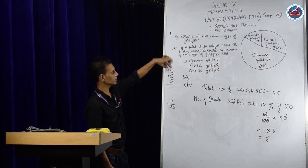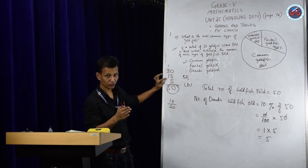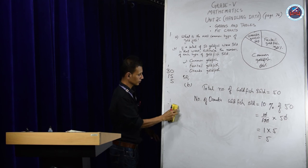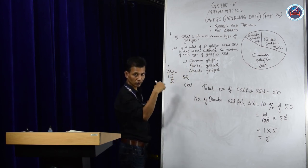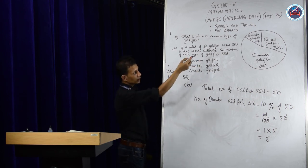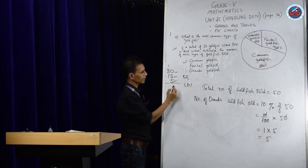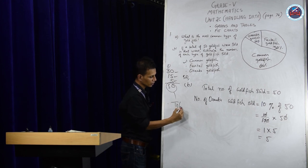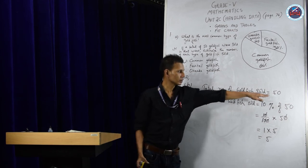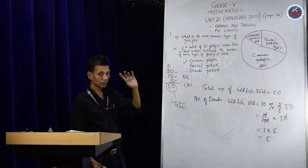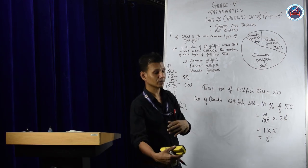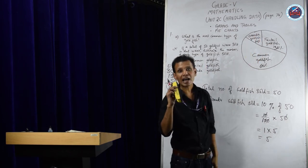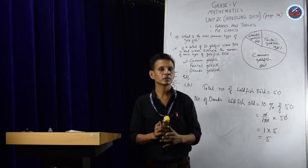Let's verify: 60% gave 30 fish, 30% gave 15 fish, 10% gave 5 fish. Adding them: 30 plus 15 plus 5 equals 50. Total fish was 50 — correct! If after adding you don't get 50, check your calculation because only 50 fish were sold.